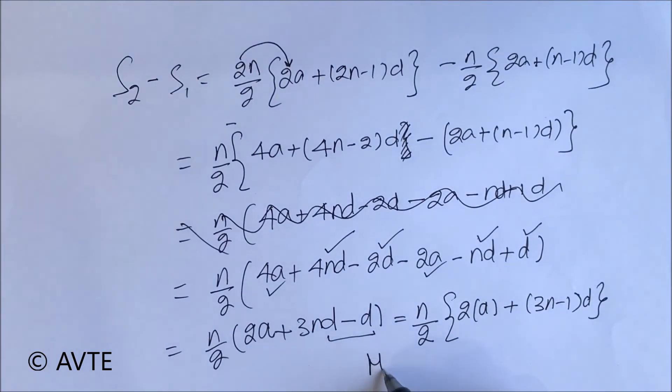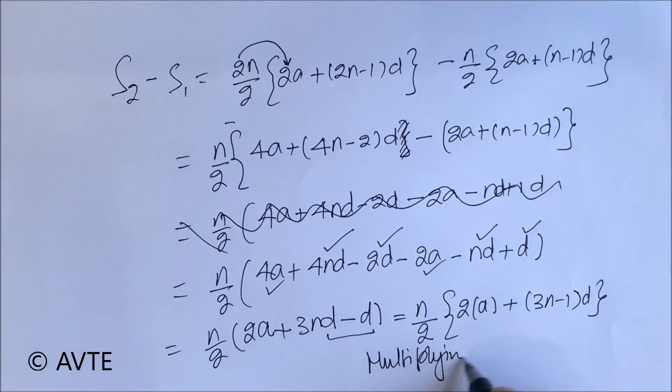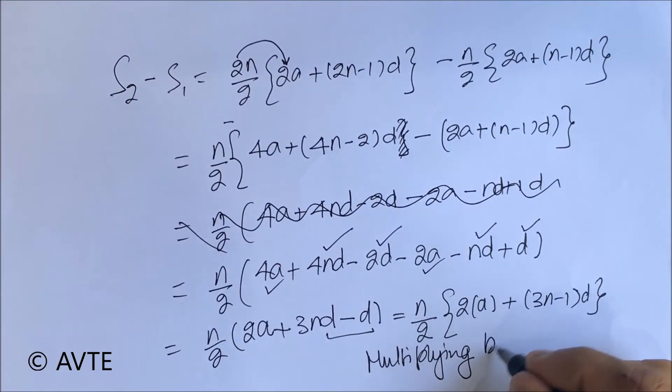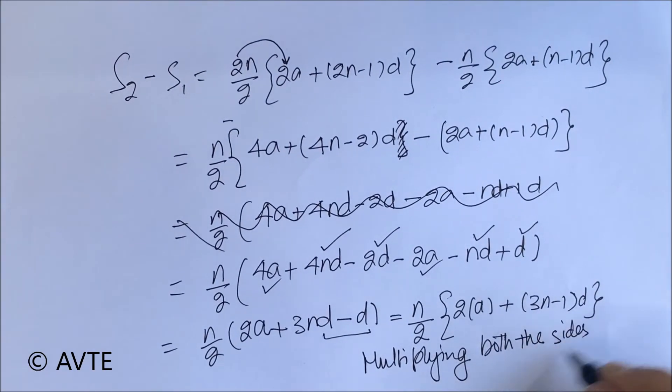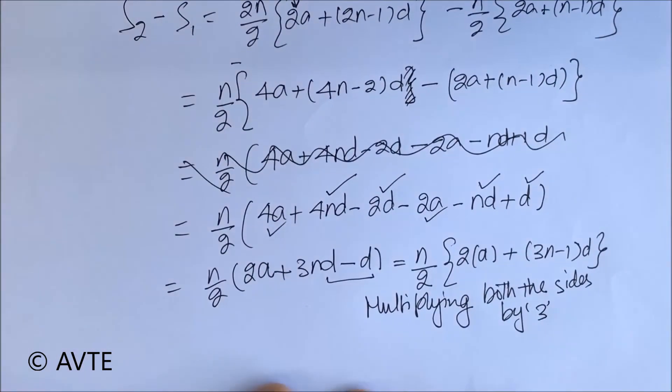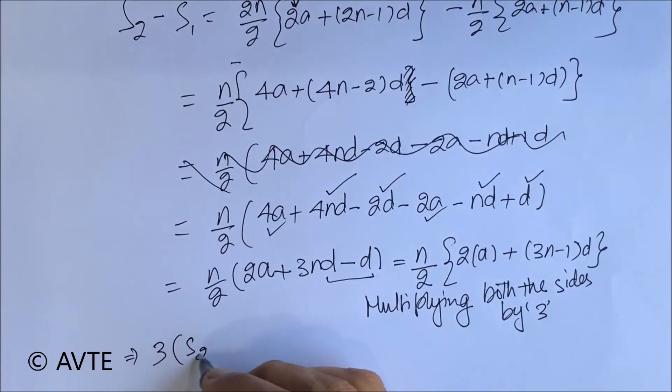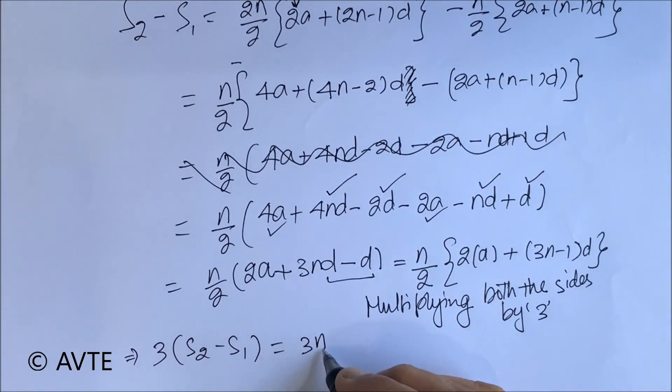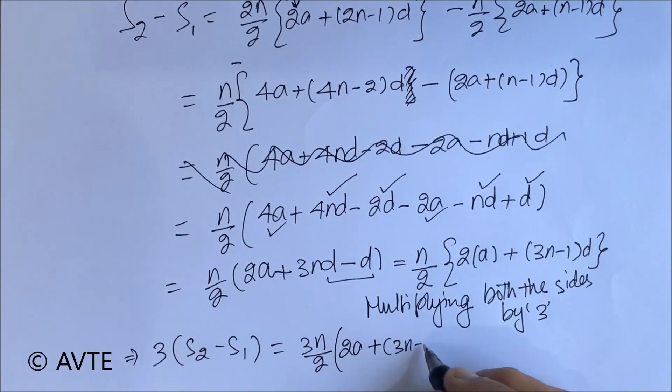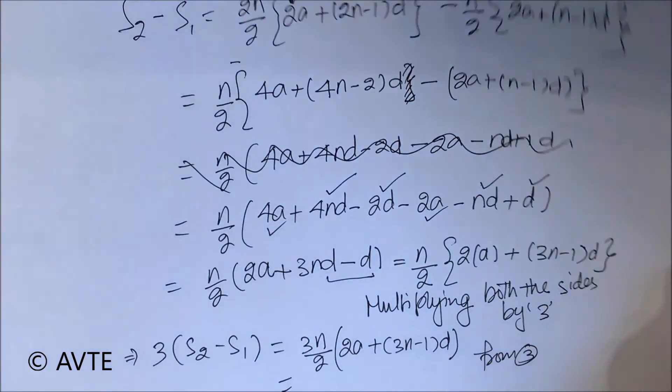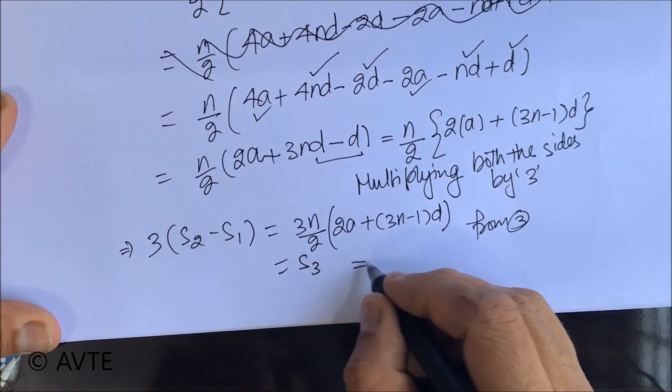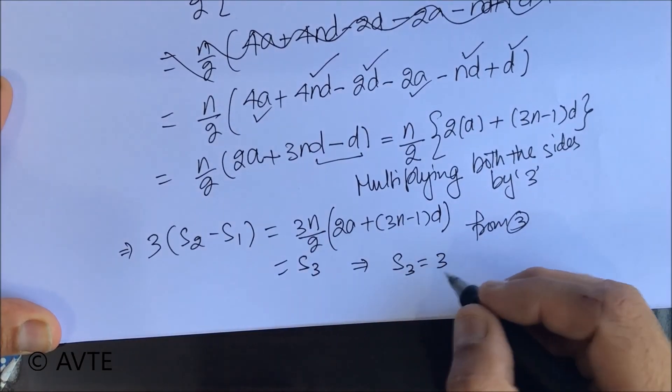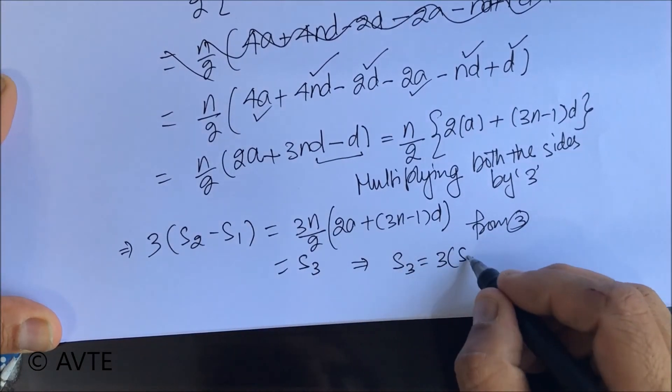Now, multiplying both the sides by 3. So we get, and from equation number 3, you can see that this is nothing but S3. So we have proved that S3 is 3 times S2 minus S1.